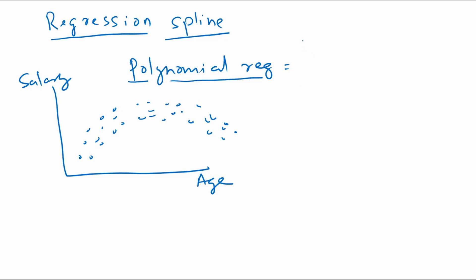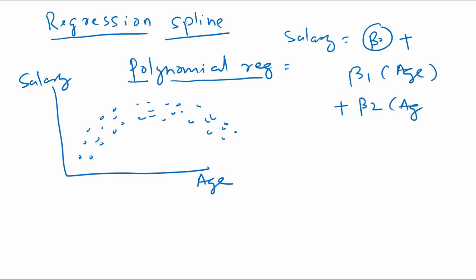The polynomial regression would be: salary, which is the target variable, equals beta naught, which is a constant, plus a slope term for age. The first variable is age, then we also take the quadratic term age squared, and also the cubic term. We can use as many polynomial terms, but we will go ahead with only three. This is one way of modeling a non-linear relationship.